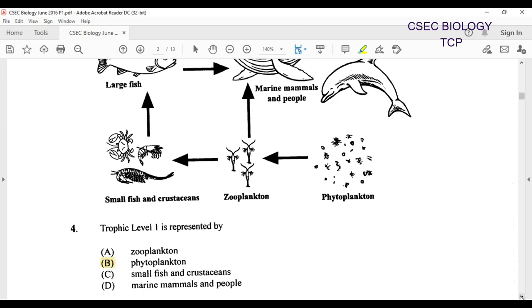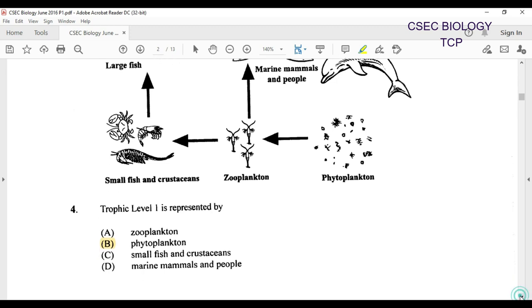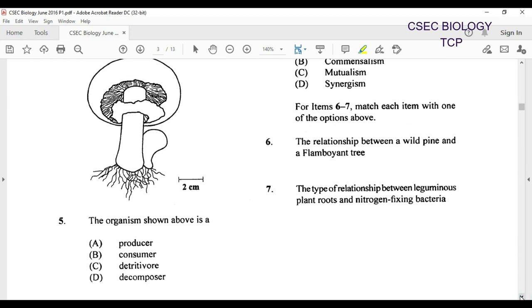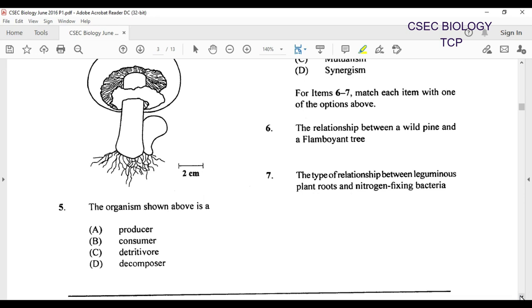We move on to question number five. Item number five refers to the following diagram of a mushroom. Now a mushroom would belong to the kingdom of fungi. We're asked what the organism shown above is. Is it a producer, consumer, detritivore or decomposer? Two things here are pretty close: detritivore and decomposer. Detritivore refers to things like earthworm, wood lice, the larger organisms. But you would have recalled as we prepared for the paper too, we made mention that bacteria and fungi are referred to as decomposers. So a fungi here would of course be captured as a decomposer.